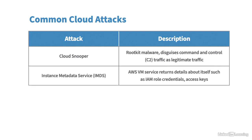Another type of attack is the Instance Metadata Service (IMDS) attack, specific to AWS virtual machines (EC2 instances). They run a service that returns details about themselves — such as any roles assigned to the VM giving it access to other resources like storage buckets, and also any access keys configured for that specific VM. Access keys give access to something specific; different users in the organization may have different access keys that allow them to authenticate programmatically to AWS.